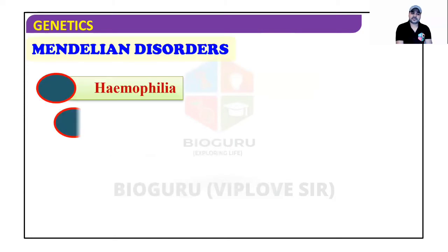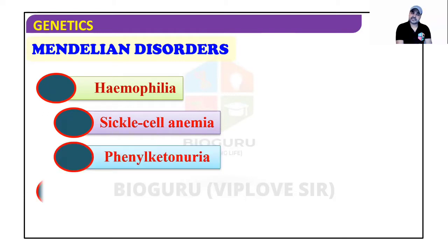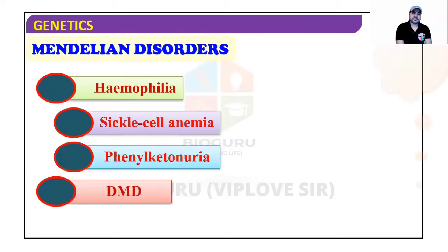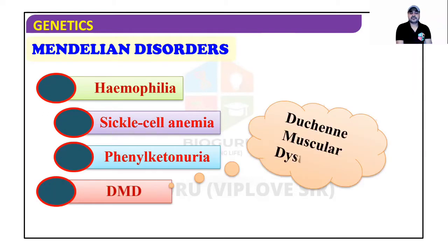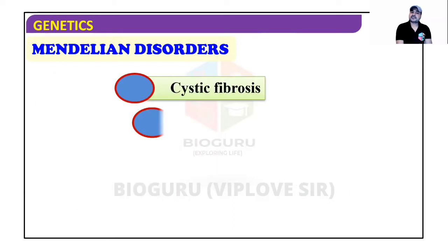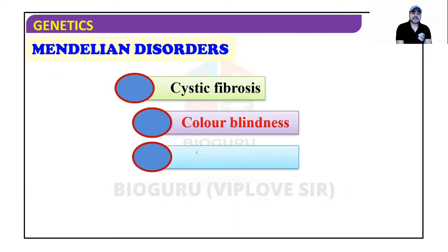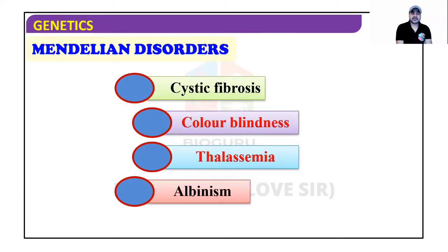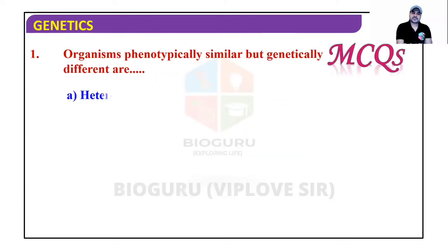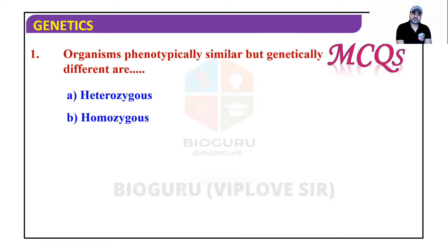Mendelian disorders include hemophilia, sickle cell anemia, phenylketonuria, Duchenne muscular dystrophy (DMD), cystic fibrosis, color blindness, thalassemia, and albinism. Organisms that are phenotypically similar but genetically different are heterozygous.